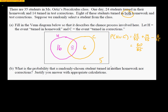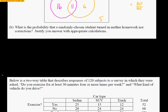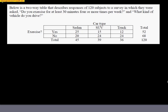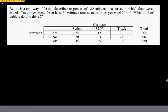So part B says: what's the probability that somebody did neither homework nor test corrections? That would be 5 out of 35. One last problem: below is a two-way table describing responses of 120 subjects to a survey asking whether they exercise for at least 30 minutes four or more times per week (yes or no), and what kind of vehicle do they drive — sedan, SUV, or truck.